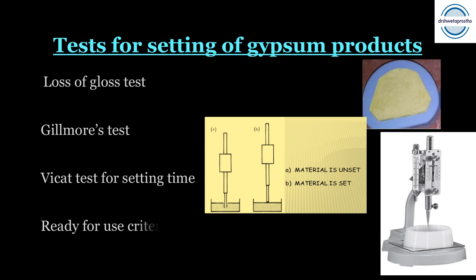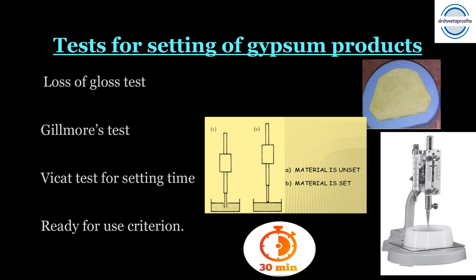We follow the ready-for-use criterion: technically, material may be considered ready for use if it has attained a compressive strength of 80%, usually attained at one hour. However, most products attain the ready-for-use standard in 30 minutes, after which we can retrieve the cast from the impression.